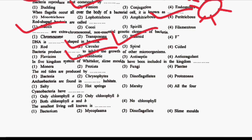Next question: in the 5-kingdom system of classification, slime molds have been included in the kingdom DASH. Option 1: Monera. Option 2: Protista. Option 3: Fungi. Option 4: Plantae. The correct answer is Option 2, that is Protista.